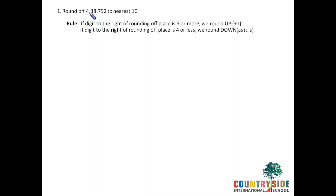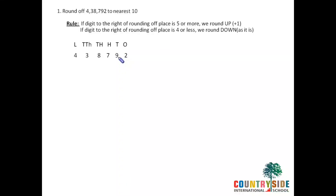Clear students? The next example: rounding off the same number 4,38,792 to the nearest tens. As it is to be rounded off to the nearest tens, first find the rounding off place by placing the number in the place value system. In the tens place the number is 9. Our rule says: if the digit to the right of the rounding off place is 5 or more, we round up — add 1. If the digit to the right of the rounding off place is 4 or less, we round down. In this example, the digit to the right of the rounding off place is 2, and 2 is less than 5.